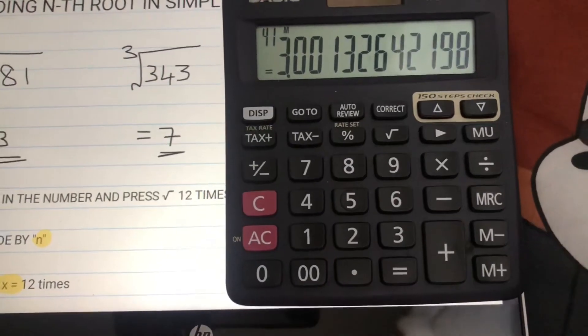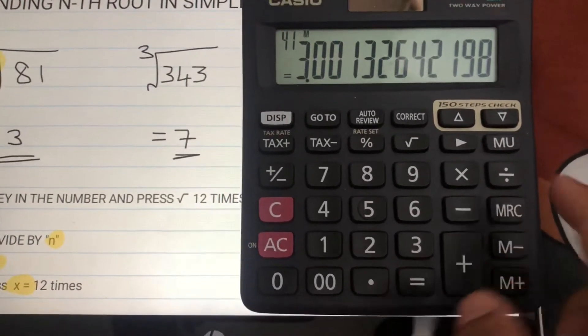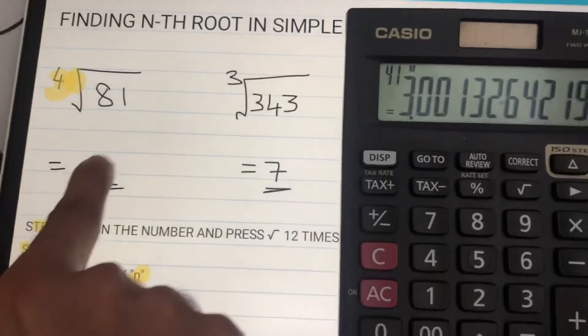You get 3.0013 something. You can ignore it. The answer is 3. Ignore the approximations. The answer is 3.